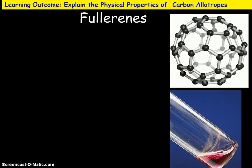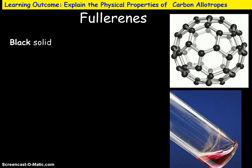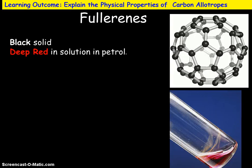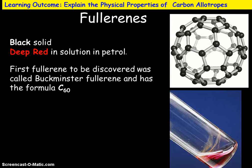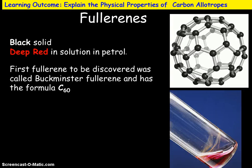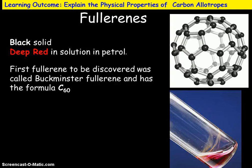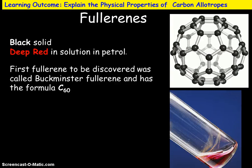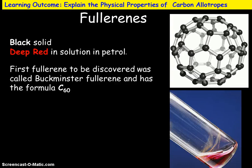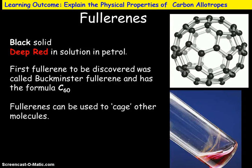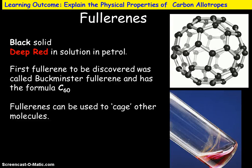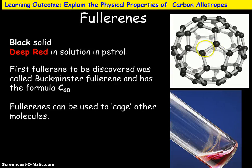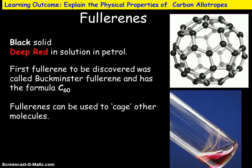The last allotrope is fullerenes, which are spherical molecules. Typically fullerenes are black solids, but when dissolved in petrol they form a deep red solution. The first fullerenes to be discovered are called Buckminster Fullerenes and have the formula C60 — a ball molecule with 60 carbon atoms. They are named after the architect Buckminster Fuller, who designed buildings of a similar shape.